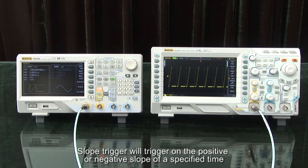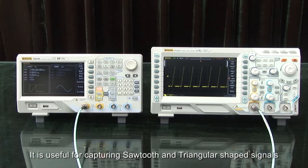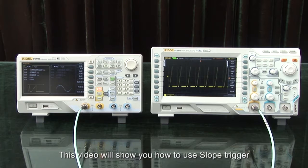Slope trigger will trigger on the positive or negative slope of a specified time interval. It is useful for capturing sawtooth and triangular-shaped signals. This video will show how to use the slope trigger.